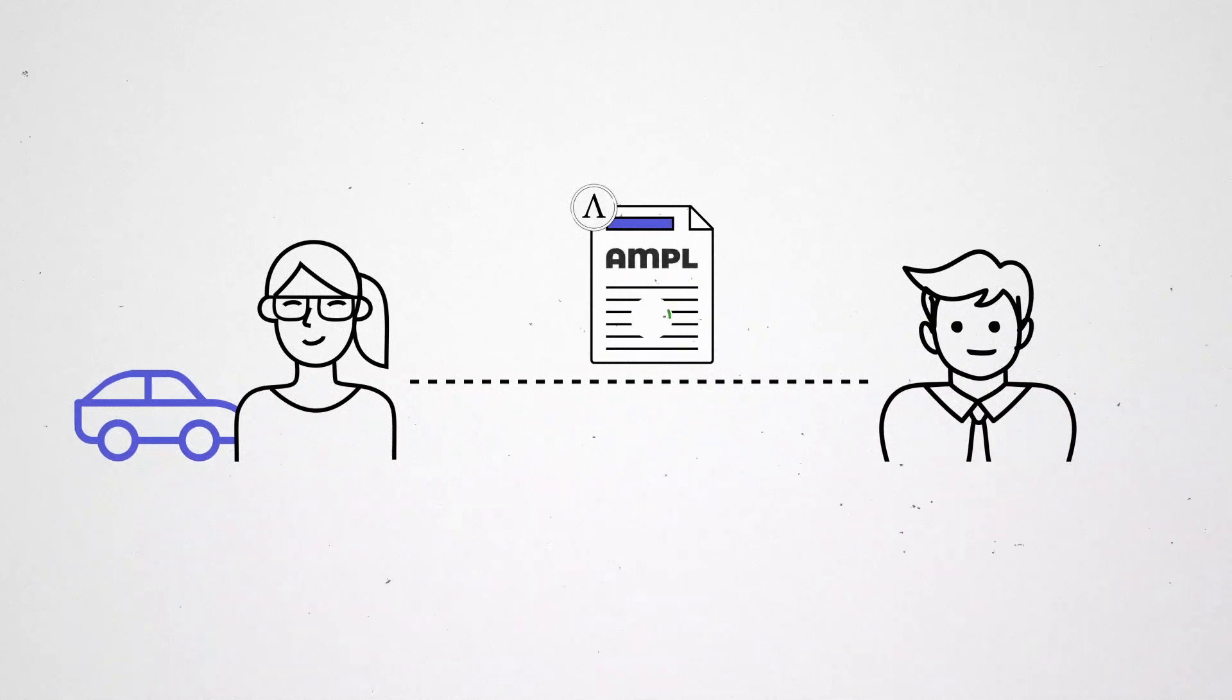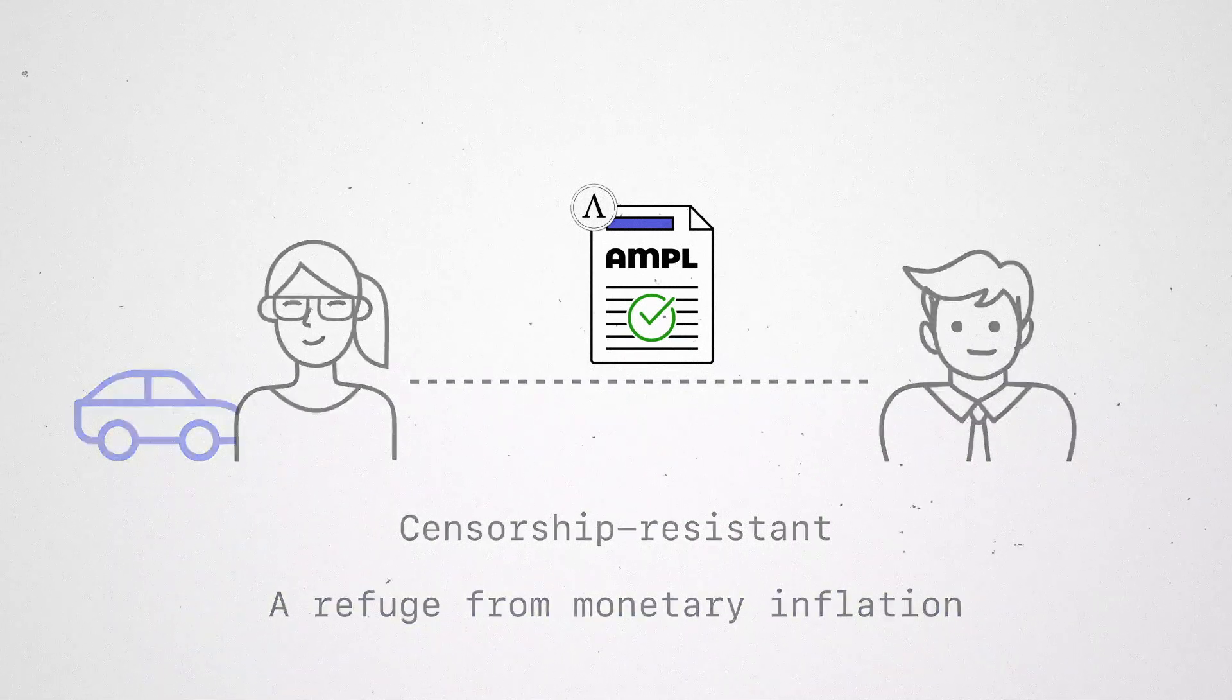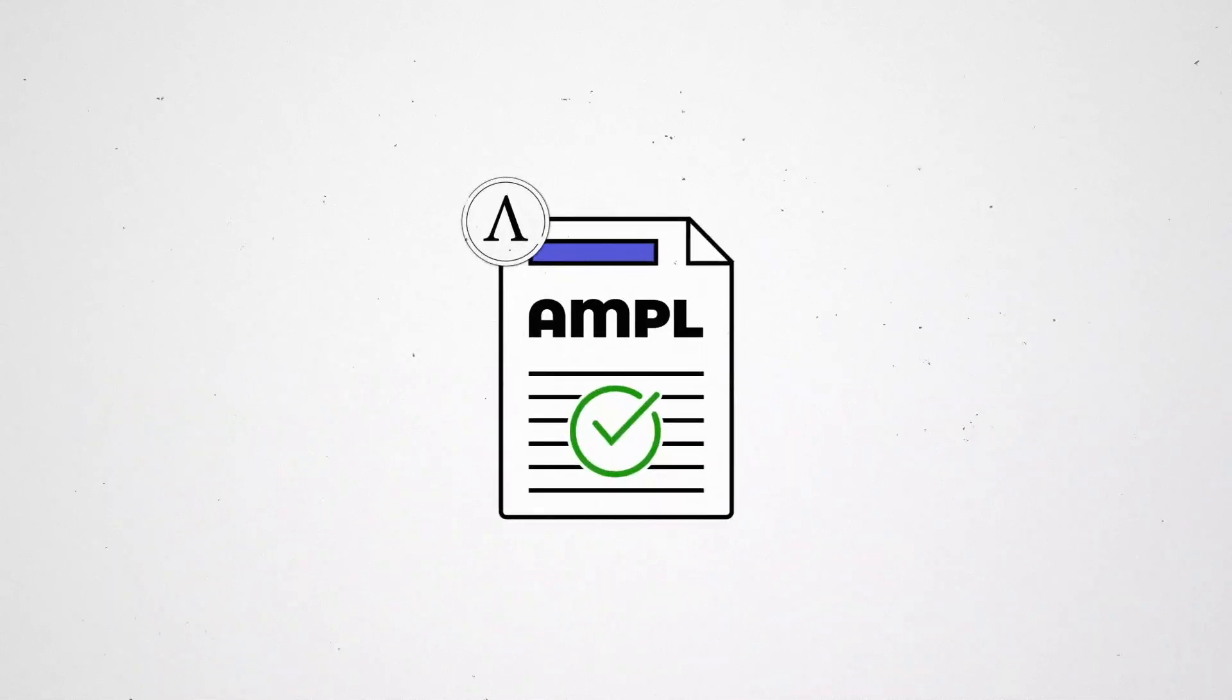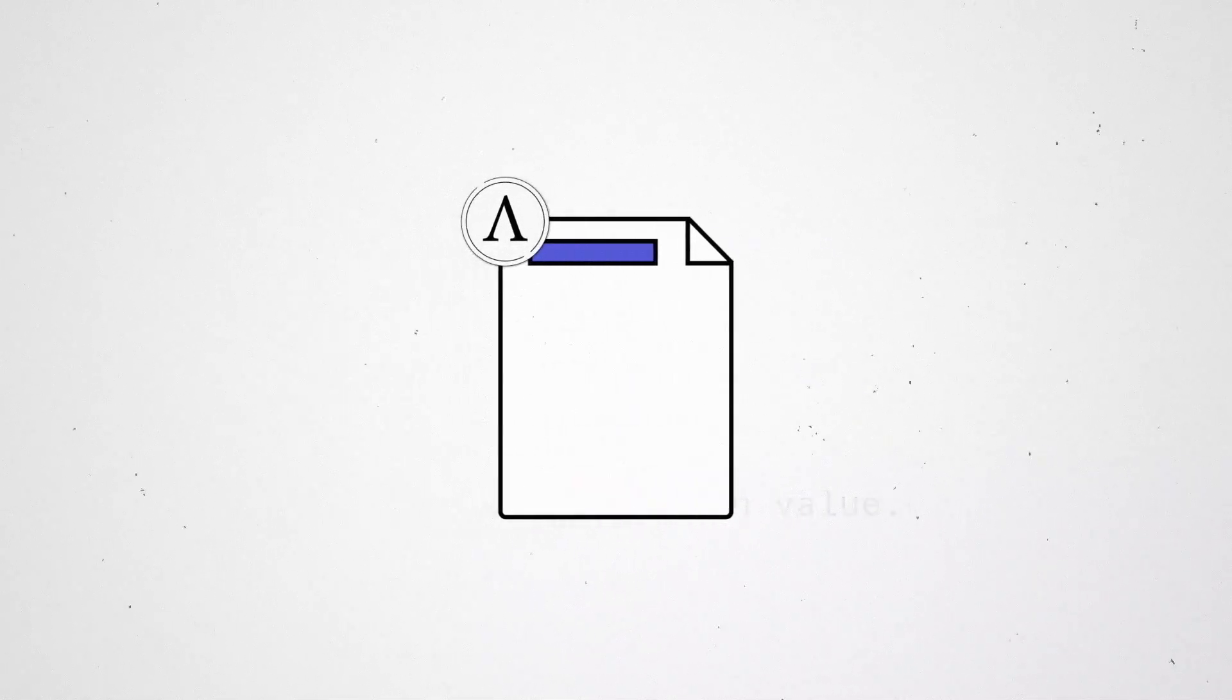Like Bitcoin, Ample is censorship resistant and a refuge from monetary inflation. But unlike Bitcoin, Ample denominated contracts are stable in value. The Ample is like Bitcoin, except it can be used in contracts.